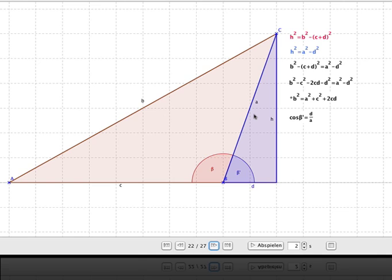But we also know that the cosine of beta-dash equals -cos(180° - beta). But if we solve here for d and substitute it in this d here.